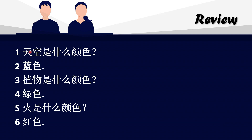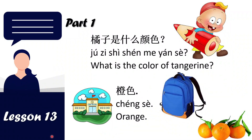We have: 天空是什么颜色 — 蓝色. 植物是什么颜色 — 绿色. 火是什么颜色 — 红色. For the first slide, we have two lines of conversation.